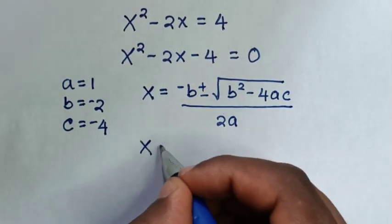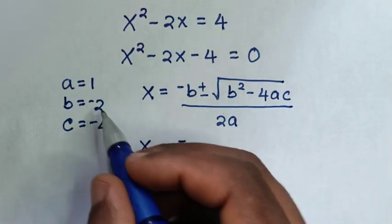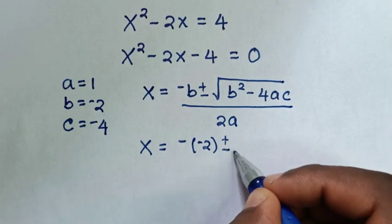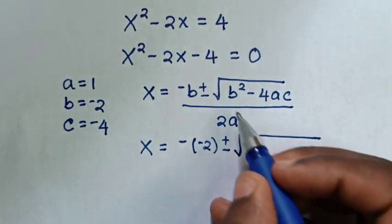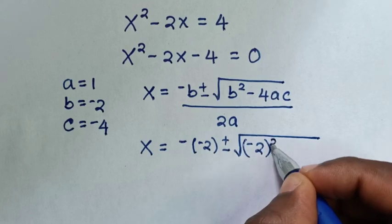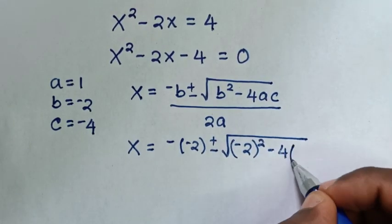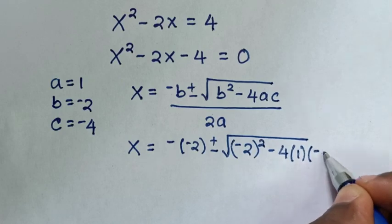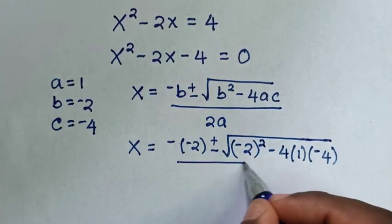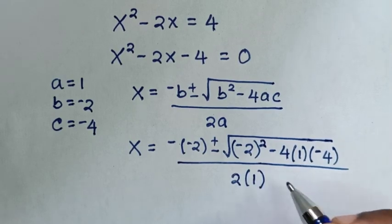Then it will be x is equal to negative b which is negative 2, plus or minus square root of b square which is negative 2 bracket square, minus 4 times a which is 1, times c which is negative 4, then over 2 times a which is 1.